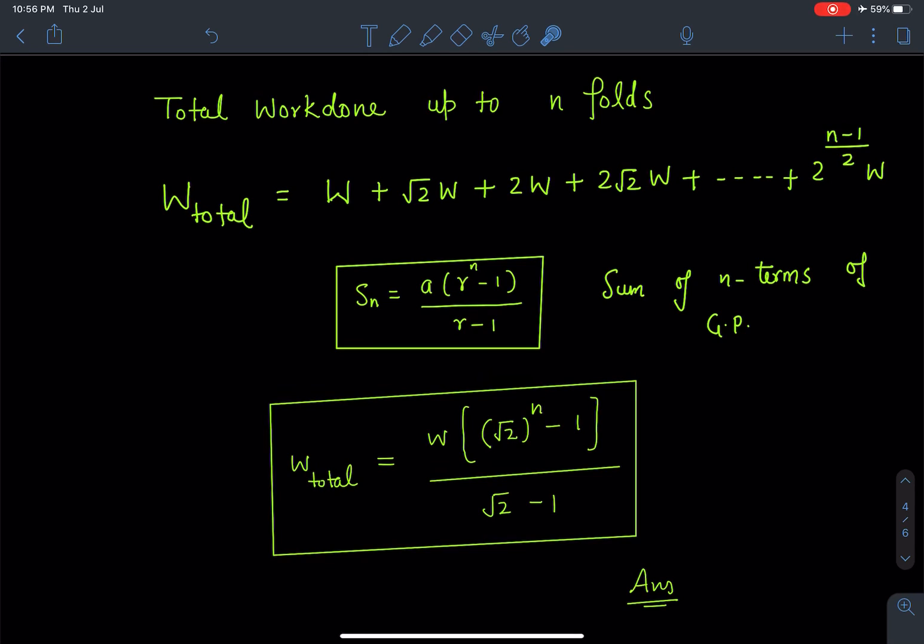So it's a GP. Sum of n terms of GP I can write as a(r^n - 1)/(r - 1), where r is the ratio of second and first term which is greater than 1 in this case, and a is the first term here. It's a standard formula.